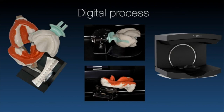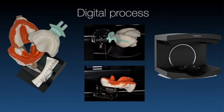In the analog way, you'd have to cast models, trim them, mount them on an articulator — probably an hour's work. With digital, you scan and do the whole thing in around 10 minutes without casting or mounting anything. For me, that's a massive advantage over conventional. It's really clean and easy — one of the best parts of this workflow.